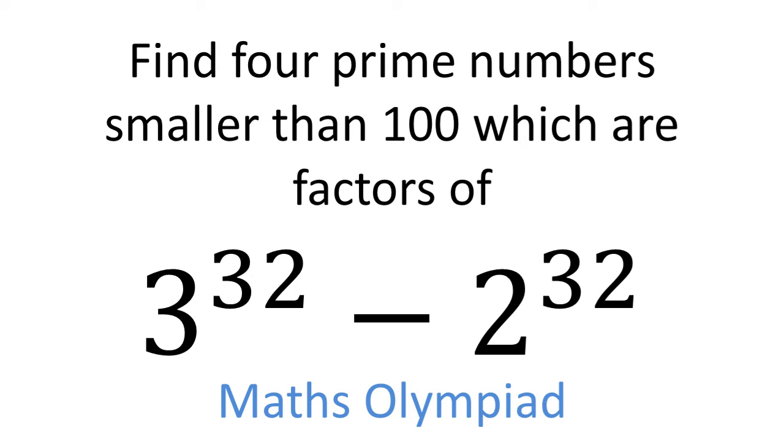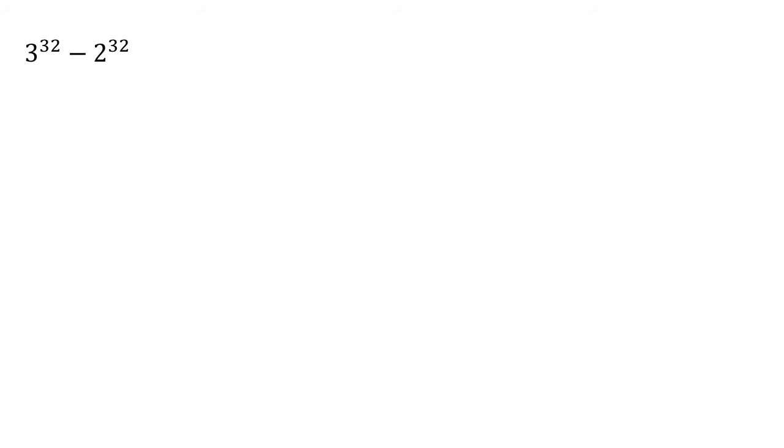In this video we're going to look at the following Math Olympiad question. We need to find four prime numbers smaller than 100 which are factors of 3 to the power of 32 minus 2 to the power of 32. Now obviously the powers on these numbers are far too high for us to deal with doing any kind of arithmetic. They're too big for the calculator so we're going to need to find a trick.